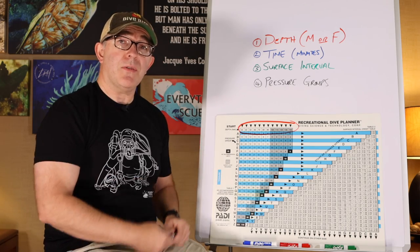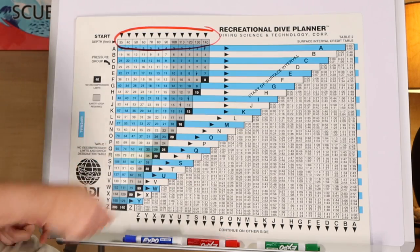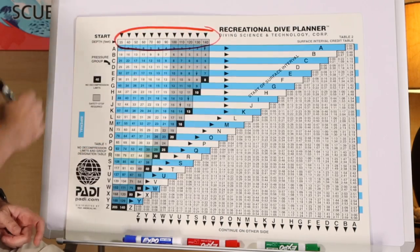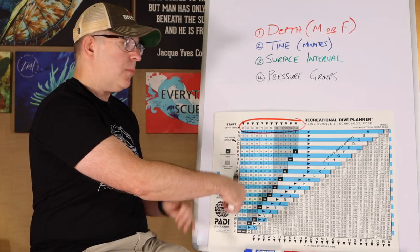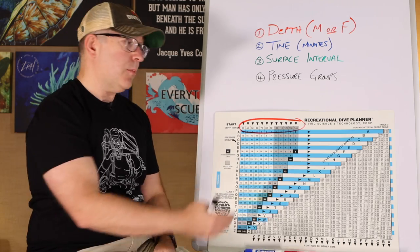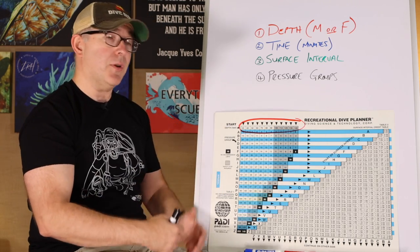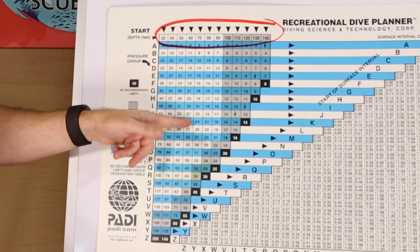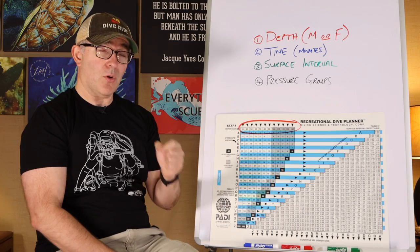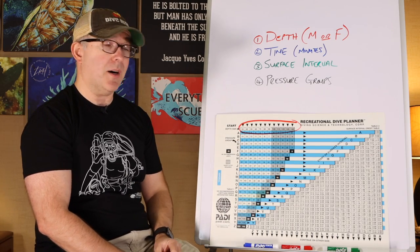When we look at the front face of the Recreational Dive Planner, we have two tables — table one and table two. On table one, circled in red along the top, we have depth. This happens to be an imperial dive table, so depth is in feet. If you were working with a metric dive table it would be in meters — but this represents the deepest point of your dive. Inside the blue and white boxes, we have time in minutes corresponding to the amount of time spent underwater during our dive.